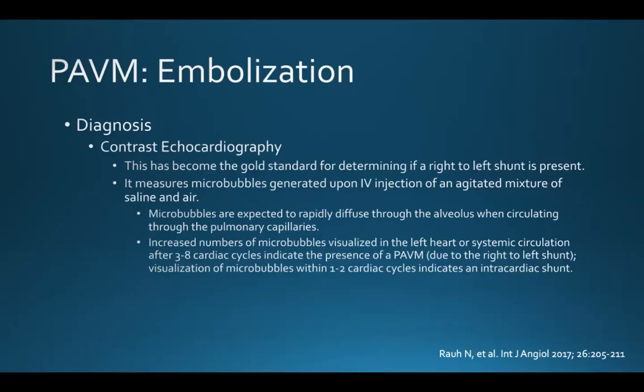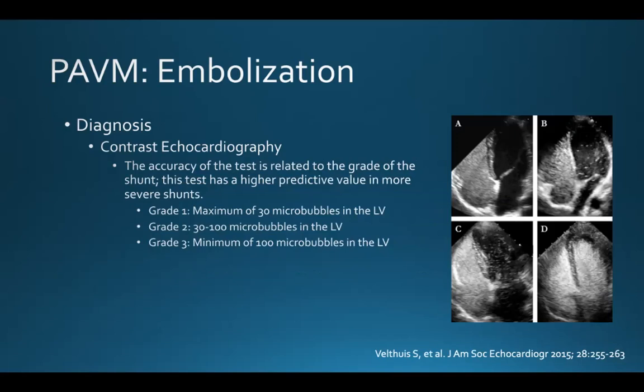Contrast echocardiography has become the gold standard for determining if a right-to-left shunt is present. This test measures micro-bubbles generated upon IV injection of an agitated mixture of saline and air. Micro-bubbles are expected to rapidly diffuse through the alveolus when circulating through the pulmonary capillaries. An increased number of micro-bubbles visualized in the left heart or systemic circulation after three to eight cardiac cycles indicates the presence of a PAVM. Visualization within one to two cardiac cycles indicates an intracardiac shunt. The accuracy is related to the grade of the shunt.